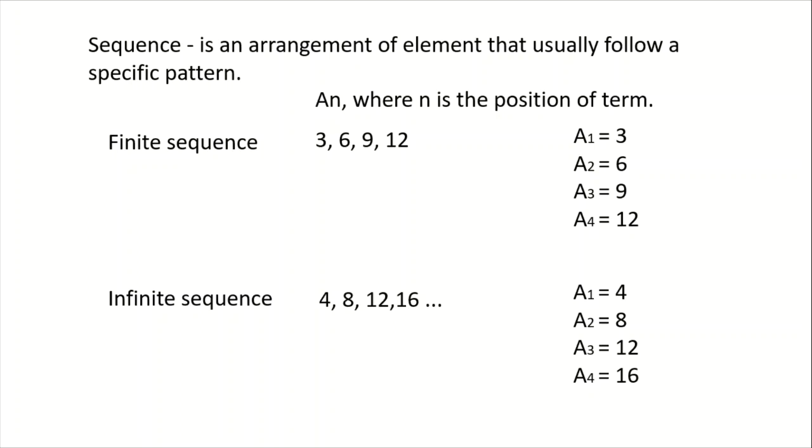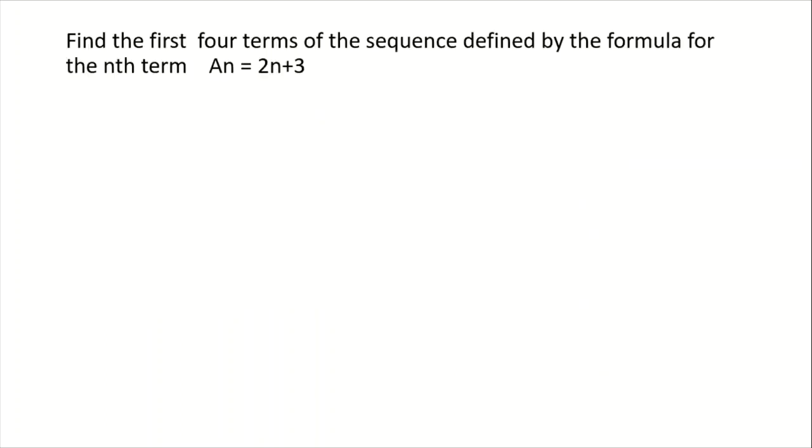So let us now try to define the nth term. Find the first 4 terms of the sequence defined by the formula for the nth term. A sub n is equal to 2n plus 3. So now we are looking for the first 4 terms. It means that from the start of the sequence, or the first term in the sequence, we are looking for up to 4 terms. So by using this given formula, let's try to solve.